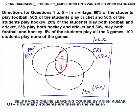25% play both hockey and cricket, and 30% play both football and hockey. The last data point: 5% of the students play all 3 games, which means y — the value common to all 3 circles — equals 5% of 100x, that is 5x. So y equals 5x.